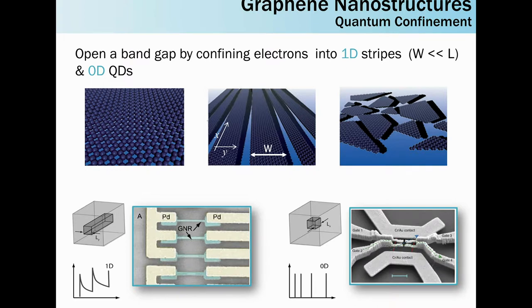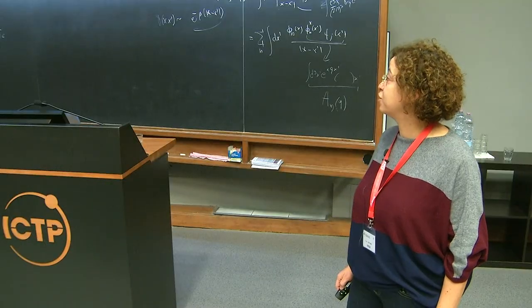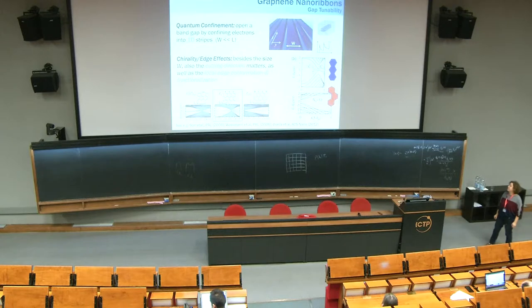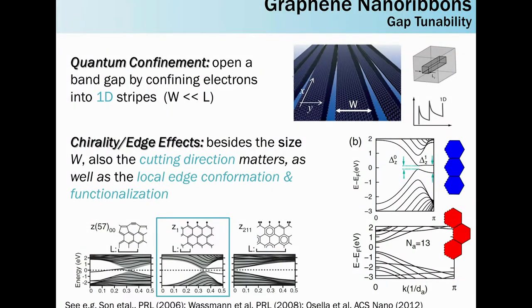As many of you know, nanostructuring is one of the best strategies to open a gap into graphene and make it suitable for standard optoelectronic applications. This can be done either by cutting graphene into one-dimensional stripes or by confining electrons into zero-dimensional quantum dots or molecules. But as theoretical predictions have told us, quantum confinement is not the only knob that we can tune to modify the gap and optical properties of these materials.